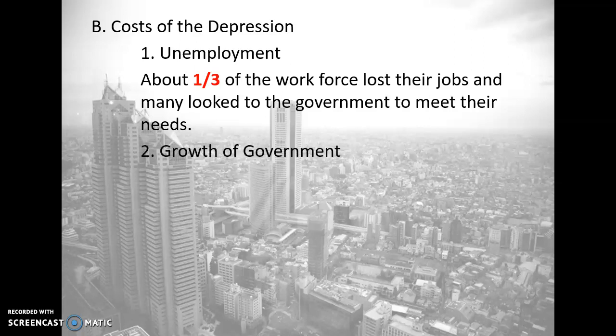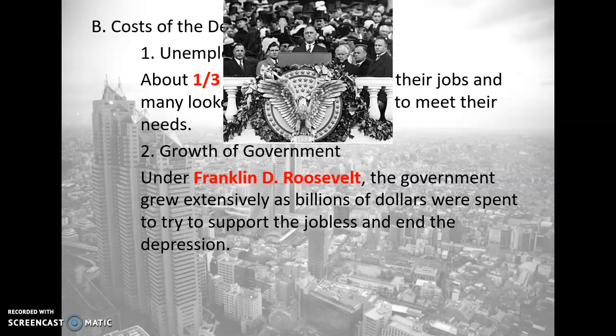Number two cost: the growth of government. Under Franklin D. Roosevelt, the government grew extensively as billions of dollars were spent to support the jobless and end the Depression. Thousands of temporary make-work jobs were created by several federal agencies. For more details on the New Deal programs FDR promoted, refer to the 8th grade American Republic playlist, or wait until you're in 8th grade. The unemployment rate never dropped below 14%, and the Depression continued to drag on. That is the end of the chapter notes.